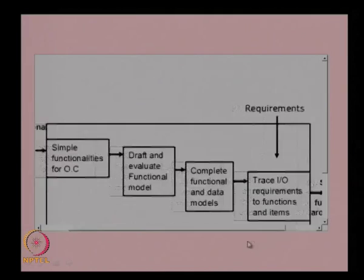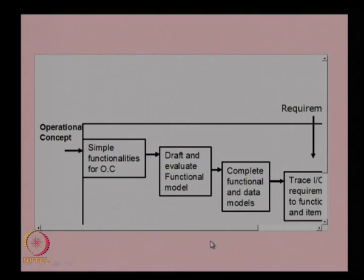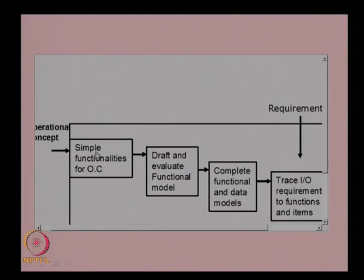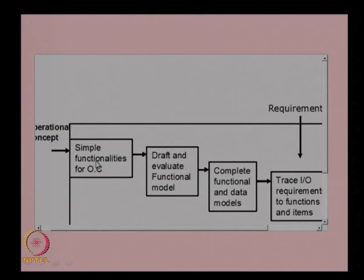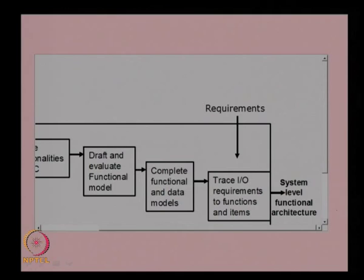The operational concept input and the requirements input are the two inputs, and then you have steps: define simple functionalities for the operational concept, draft and evaluate the functional model, complete functional and data models, and trace input-output requirements. Once you do all these, you will actually get the functional architecture or functional structure of the system, which will satisfy the requirements as per the customer demands.